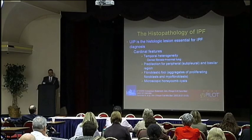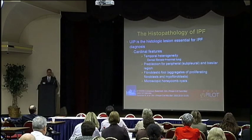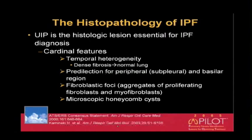Briefly, the histopathology of IPF. UIP — usual interstitial pneumonia or usual interstitial pneumonitis — is the histologic lesion essential for the diagnosis of IPF. The cardinal features are temporal heterogeneity, meaning areas of very advanced, dense fibrosis intermixed with areas of relatively normal lung. It has a predilection for peripheral and basilar locations, as we mentioned earlier with radiographic changes.